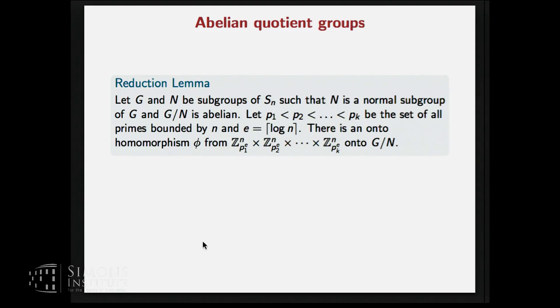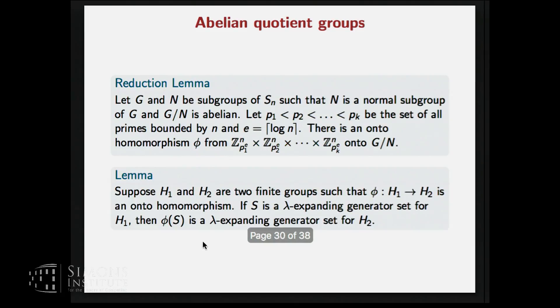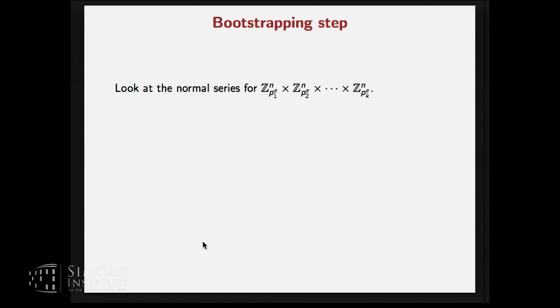Here we use a result which says that for any such abelian quotient group G/N, we have a homomorphism, an onto homomorphism from this group onto G/N. Well, why is this useful? Because there is another result which says that if we have an expanding generating set for this, that also gives an expanding generating set for this. So in particular, if there is a homomorphism from H1 to H2, then a generating set for H1 can simply be transformed into a generating set for H2 by taking its image under the homomorphism. So from G/N, now we have come to this product group.